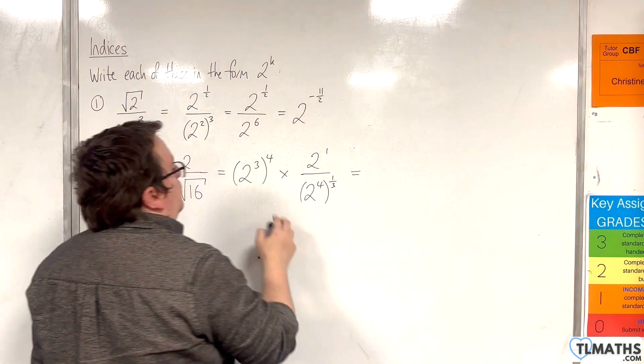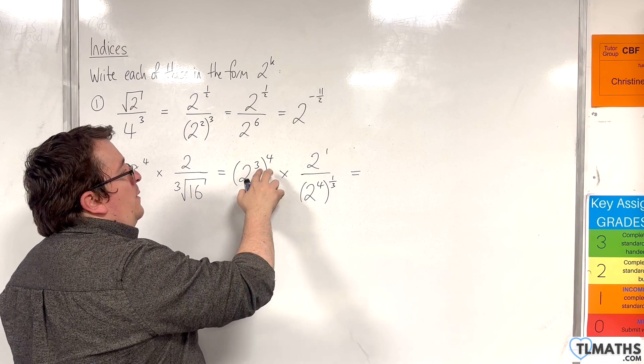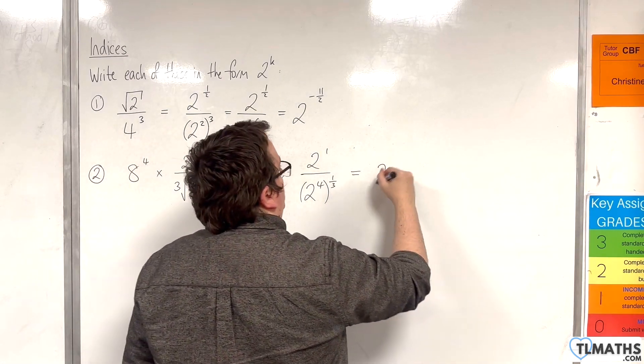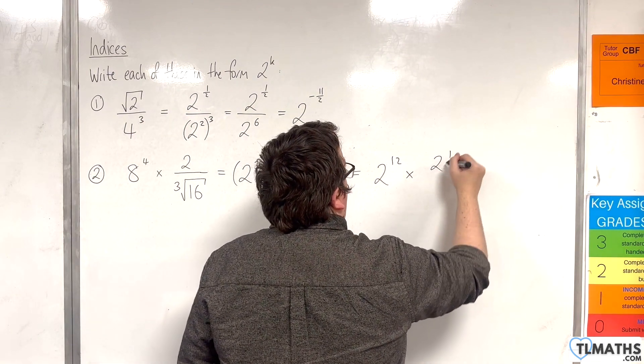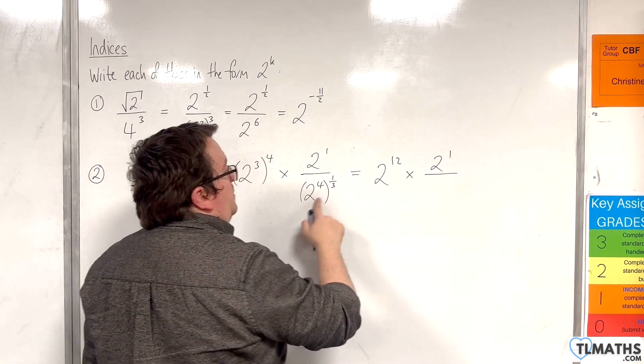So let's tidy this up. We've got 2 to the power of 12, times by 2 to the power of 1, over 2 to the power of 4 thirds.